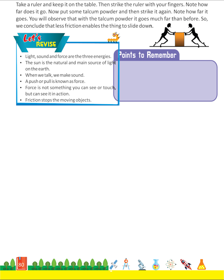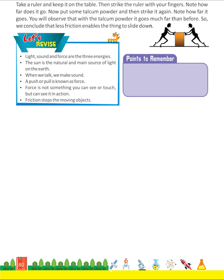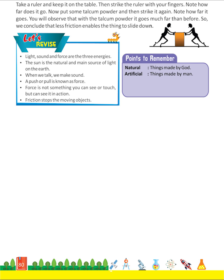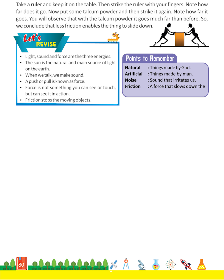Points to remember: Natural — things made by God. Artificial — things made by man. Noise — sound that irritates us. Friction — a force that slows down the movement of an object.